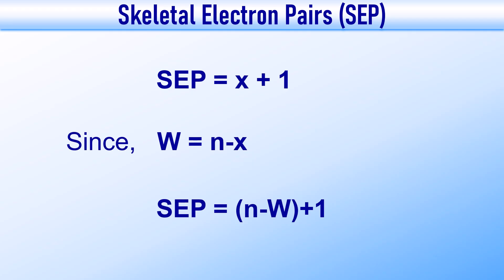Now let us see how to find the number of skeletal electron pairs (SEP), which is another value often asked in exams. It is given by X + 1. Since the Wade's index is W = N − X, the number of skeletal electron pairs can be written as N − W + 1. This formula allows us to directly calculate the SEP once we know the Wade's index.